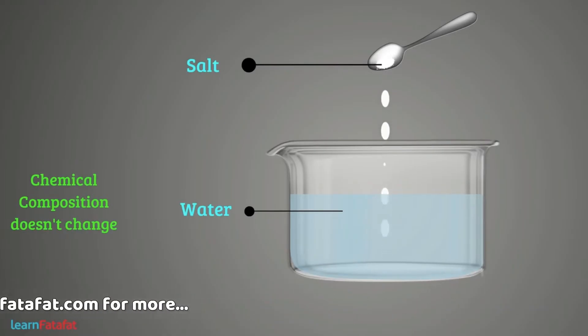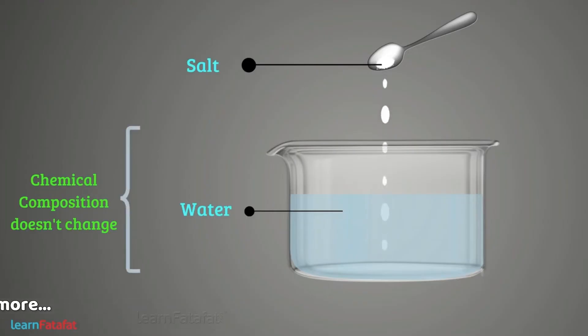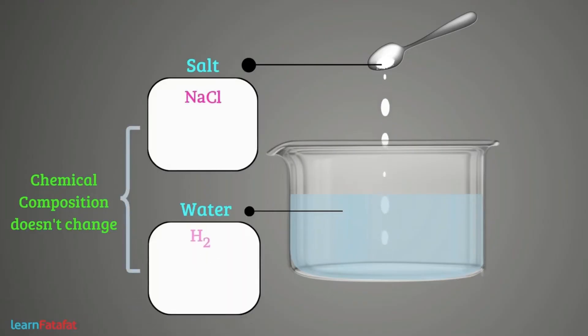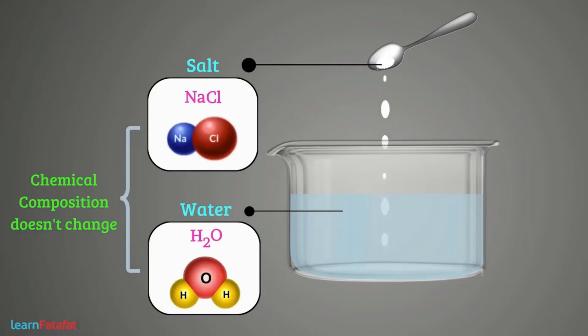By the term chemical composition, we mean elements such as sodium, chlorine, hydrogen, oxygen, etc. and their amount in the basic structure of the substance.